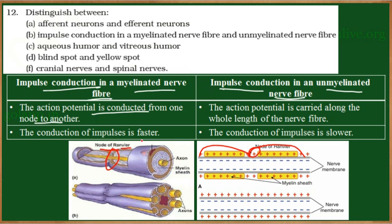Because the impulse jumps from one node to another, the conduction of impulse is always faster in myelinated nerve fibers. In unmyelinated nerves, the impulse is carried along the entire length of the axon, and therefore the impulse is slow. So myelinated conduction is faster; unmyelinated conduction is slower.